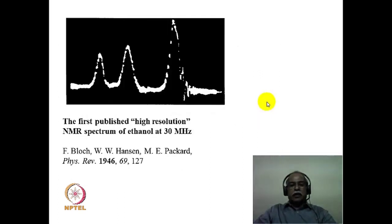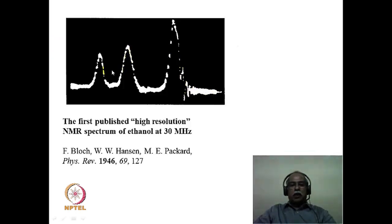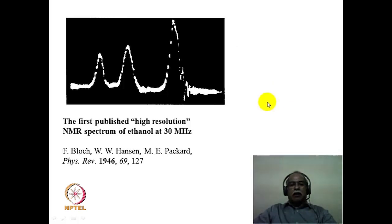Here is the very first spectrum of ethyl alcohol, published using a 30 megahertz NMR spectrometer corresponding to roughly 0.7 tesla of magnetic field strength. This is a very unresolved spectrum by today's standards, but from the historic perspective, it is a very important discovery. When you look at the spectrum, you see three different peaks. Ethyl alcohol has a CH3 group, a CH2 group, and an OH group. One can assign these three peaks accordingly. Measuring the area under the three peaks gives a ratio of 3:2:1, corresponding to CH3, CH2, and OH — a wealth of information available from the very first NMR spectrum.